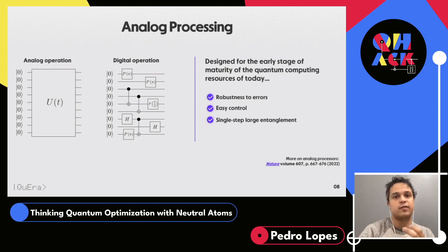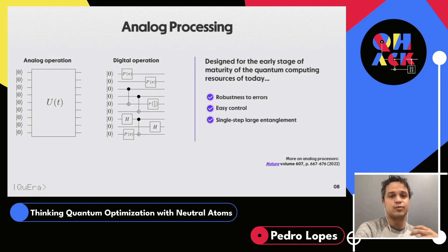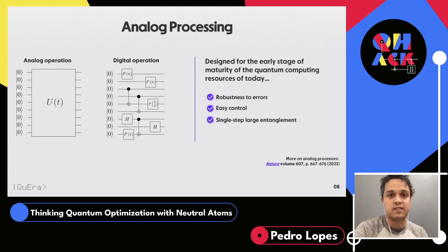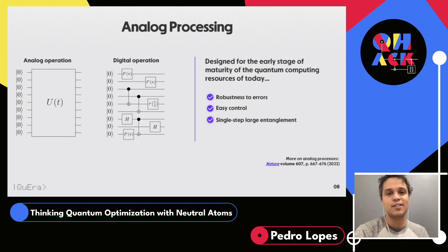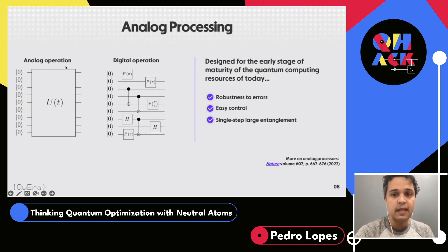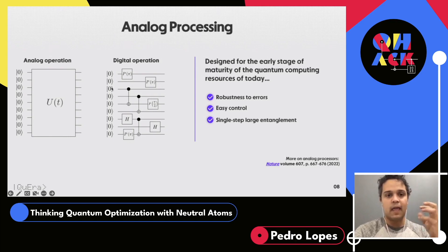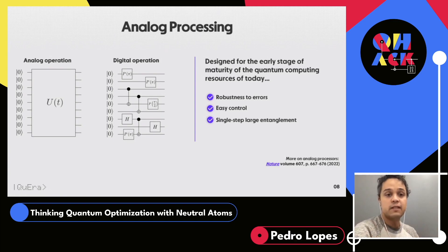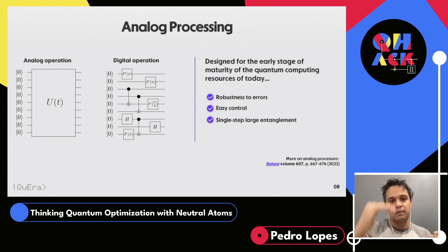For those with experience doing quantum simulations of quantum phases or quantum states, you have to do Trotter decompositions, which by themselves also introduce errors. This type of analog operation allows you to compute quantum dynamics of your processor in an extremely efficient way. It's very easy to control because we can forget about doing every single operation on every single qubit and instead control qubits together globally, creating large entanglement over many particles in a single step.